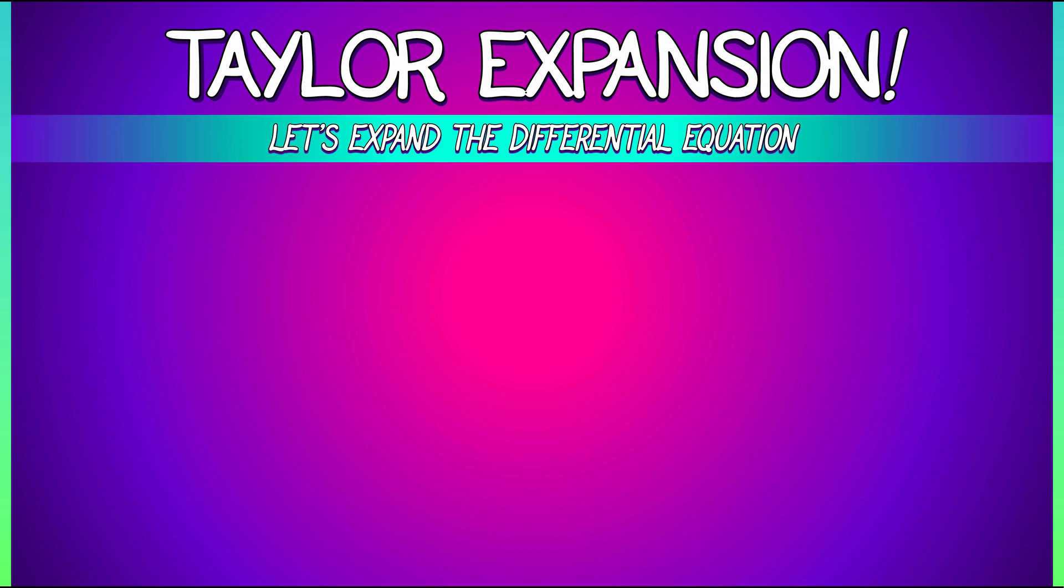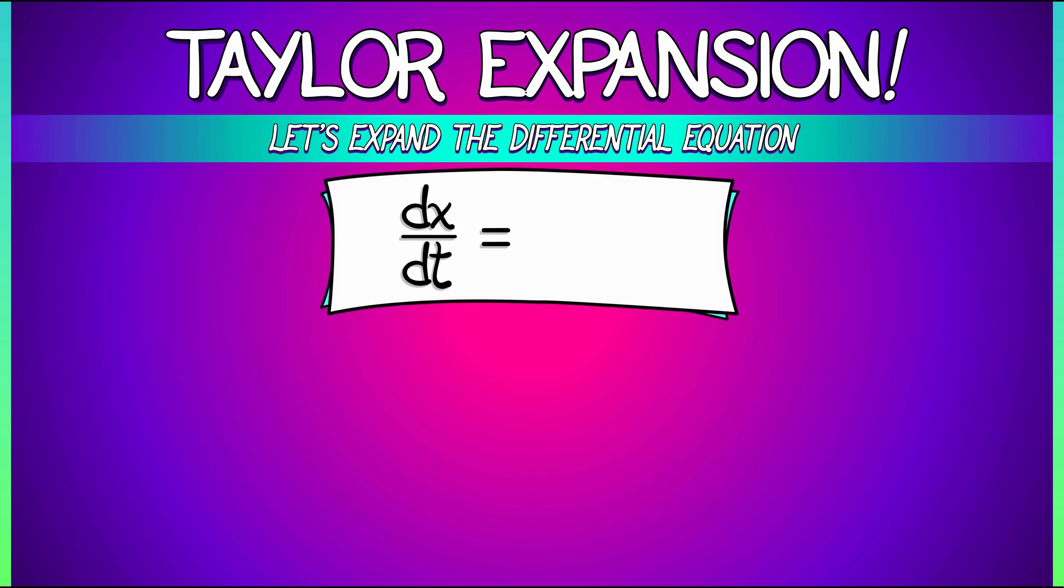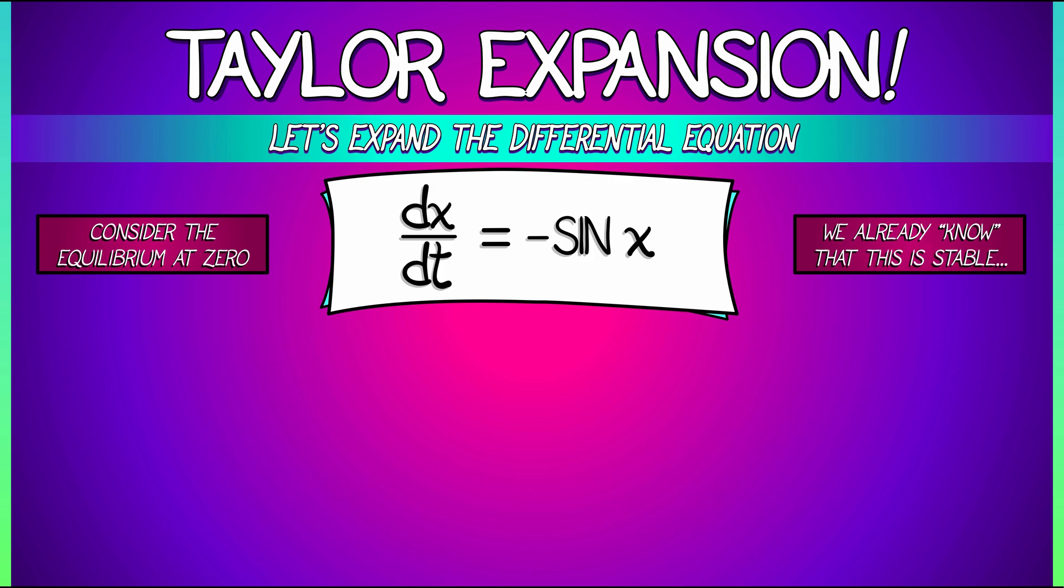Let's go back and consider the example we did earlier: dx/dt equals minus sine of x. You know, and I know that there's an equilibrium at x equals zero. And you know, and I know that it is a stable equilibrium. Solutions converge to it. How can we prove this?